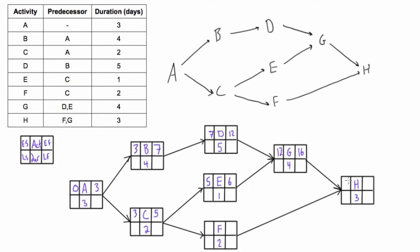We're not sure what to put for H yet because there are two arrows coming in. Going back to C's early finish of five — we bring that to F's early start, so five plus two is seven. Now for H, we have either seven or sixteen coming in, and sixteen obviously wins because H depends on both G and F. We can't start H at the end of day seven because we need to wait for G to finish at the end of day sixteen. So we bring that sixteen in.